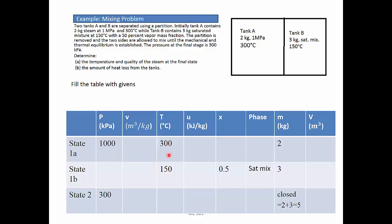For state 1A, there are two intensive properties P and T. State 1B has two intensive properties T and x. State 2, we only have one intensive property. But we should be able to find at least everything for state 1A and state 1B.